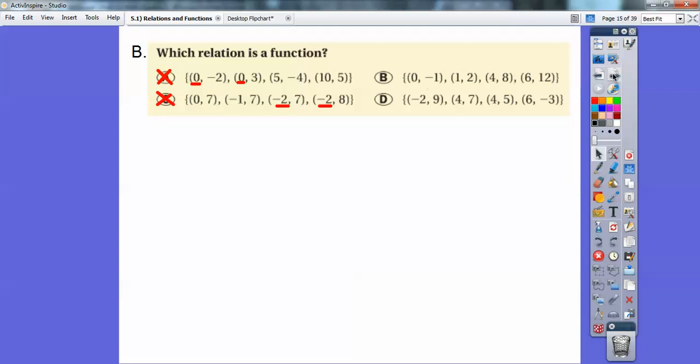C, the negative 2's are repeating, so that's not a function. D, the 4's are repeating, so the only one where the X is not repeating is choice B, so the answer is choice B.